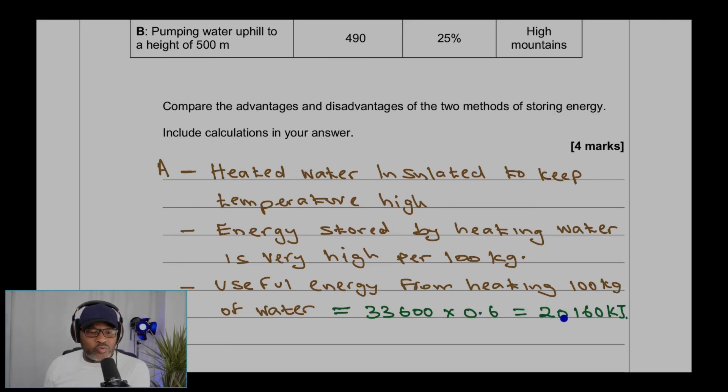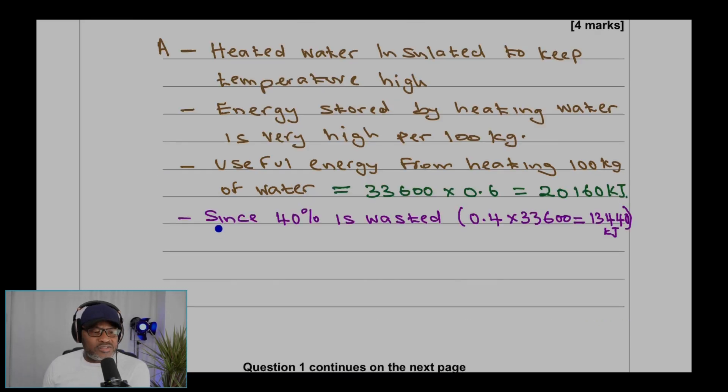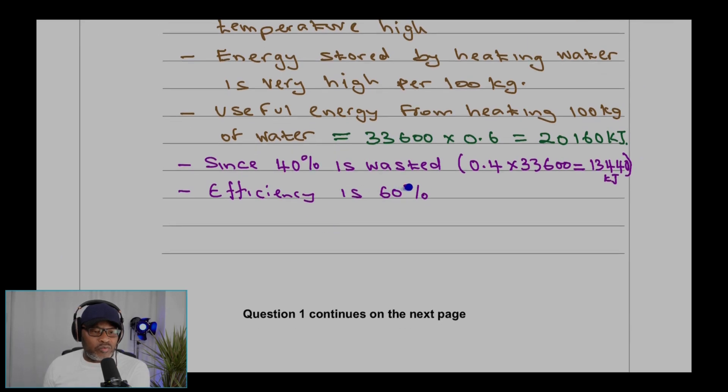Also, since 40% is wasted, the value for 40% will be 33,600 times 0.4 (40 over 100), and that is 13,440 kilojoules. And efficiency we know is 60% because that's useful.